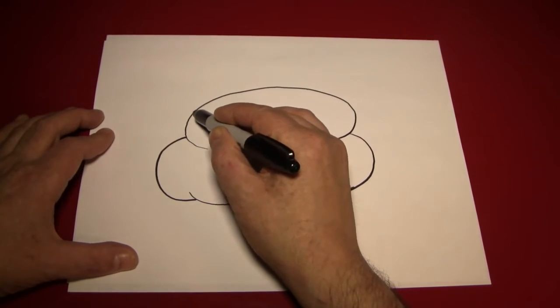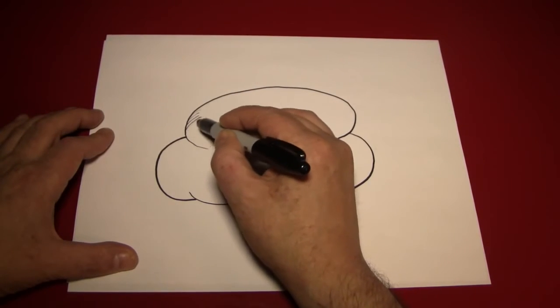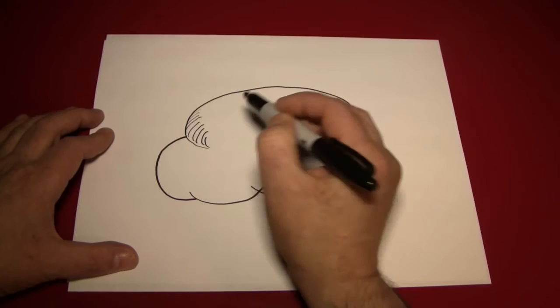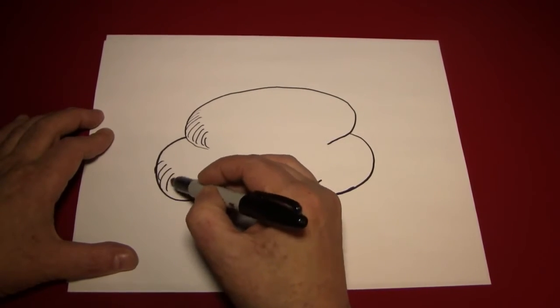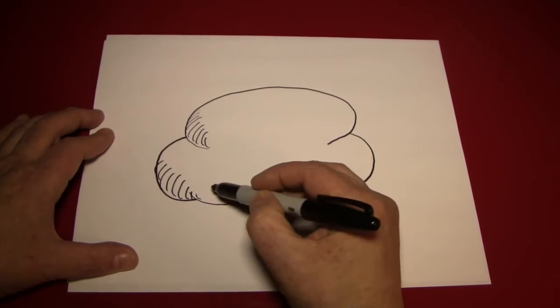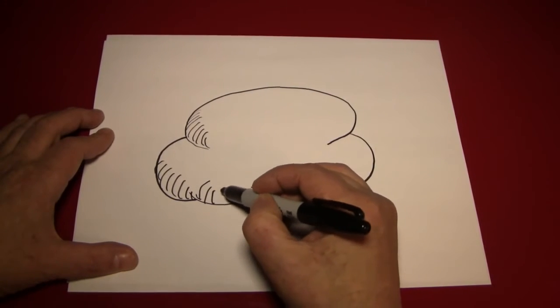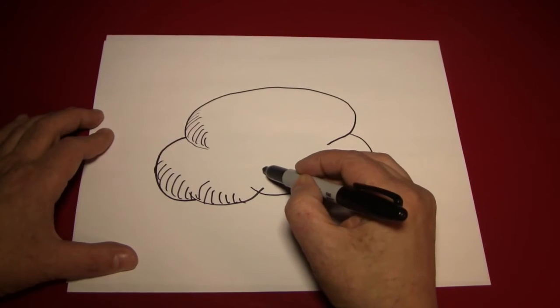So we'll start here. And you see we'll just make little hash marks like that. Do the same thing over here. Over here. Over here.